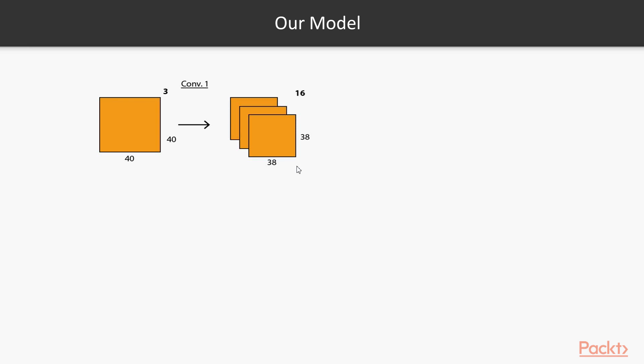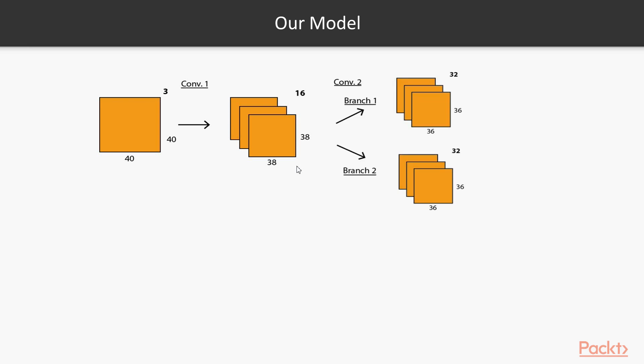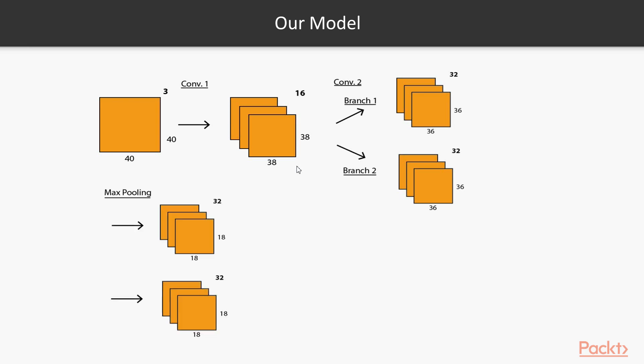Then we will convolve it with some filters and we will obtain 16 38x38 outputs. We will see in the code that the way to convolve the weights is the same as for a grayscale image — we just need to specify we are using 3 channels where before we specified just one. Then, in order to make the network more interesting and less repetitive, I decided to use branches in the graph. There will be two different branches doing the same operations with the same size. Afterwards, we will do a max pooling in each branch to reduce their dimensionality by half. Finally, we will concatenate them and reshape them into a one-dimensional tensor, and perform a normal feedforward operation. The output layer will consist of 13 nodes, because we are dealing with 13 different classes or textures.